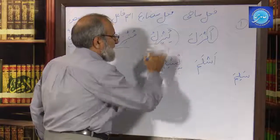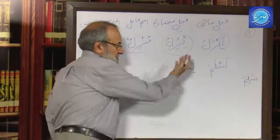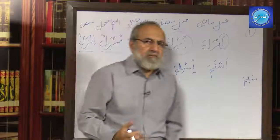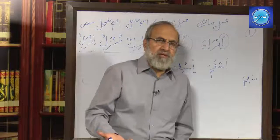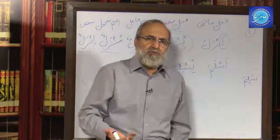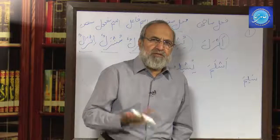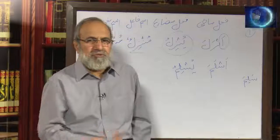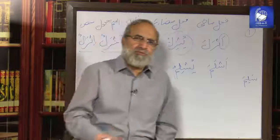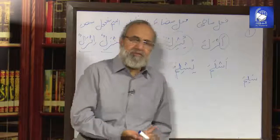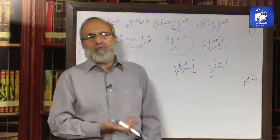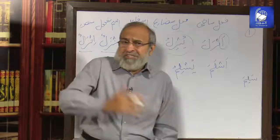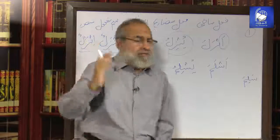Falam-ma Aslama — Aslama means 'he submitted.' If two people submitted, it is Aslamaa, as mentioned in the Quran about Ibrahim and Ismail Alayhim as-Salam: 'Falam-ma Aslama wa Talla-hu lil-Jabeen.' The Mudare of Aslama is Yuslimu, exactly like Yunzilu. You can go through the full Gardaan of Mudare: Yuslimu, Yuslimani, Yuslimuna, Tuslimu, Tuslimani, Yuslimna, Tuslimu, Tuslimani, Tuslimina, Tuslimana, Uslimu, Nuslimu.